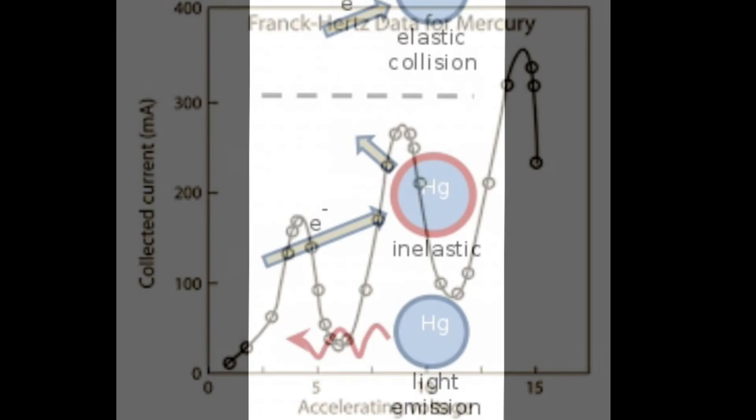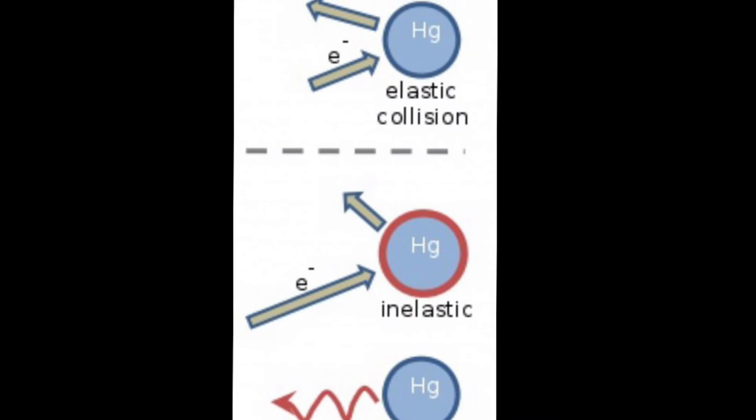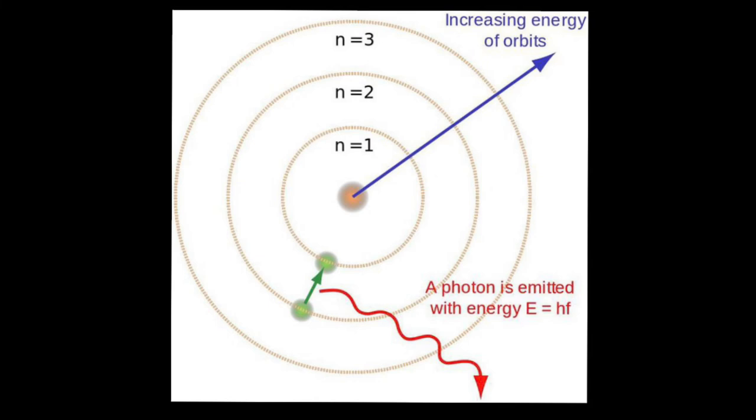They concluded the drop is attributed to inelastic collisions between the accelerated electrons and atomic electrons in the mercury atoms. The sudden onset suggests that the mercury electrons cannot accept energy until it reaches the threshold for elevating them to an excited state.